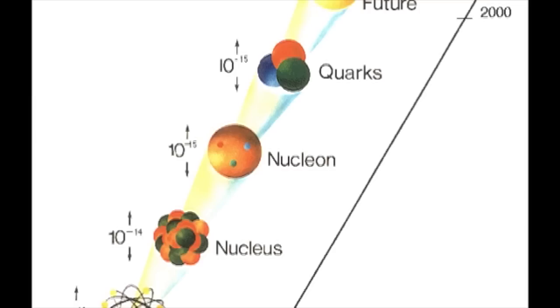The idea that nucleons, that is protons and neutrons, could be split into smaller particles was developed in the 1960s. These smaller particles were called quarks.